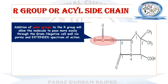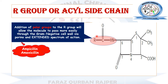We can also modify the R acyl side chain with certain types of polar functional groups, such as an amino functional group. The effect of this polar functional group is to enhance the antibacterial spectrum of penicillin — the drug will now be able to pass through the porins (channels) of the gram-negative cell wall, increasing the spectrum towards gram-negative bacteria. This converts penicillin into an extended-spectrum penicillin. Examples of extended-spectrum penicillins are ampicillin and amoxicillin.